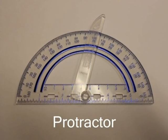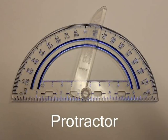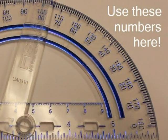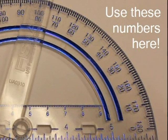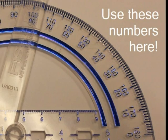In order to measure angles, we're going to use this mathematical tool. We call it a protractor. The numbers that we are going to use to actually measure the angles are shown here. They can be found on the curved part of the protractor.